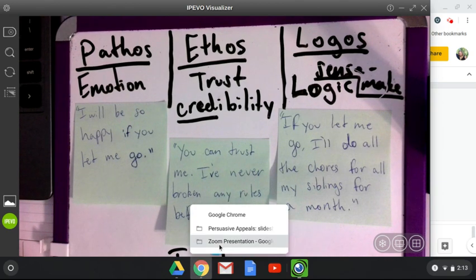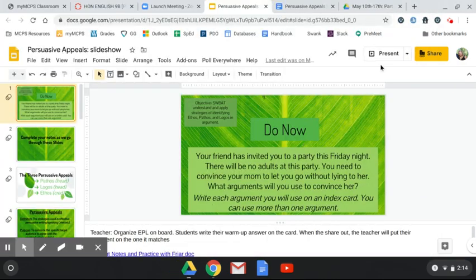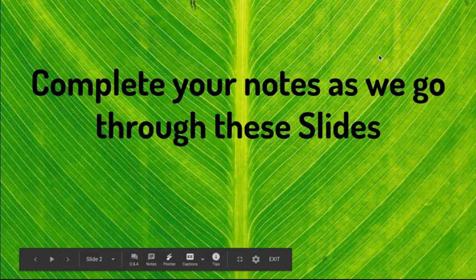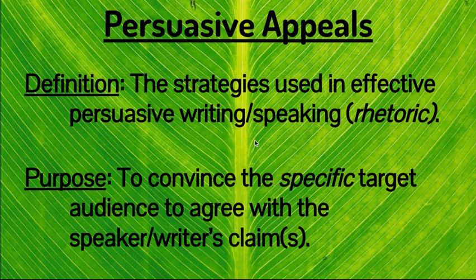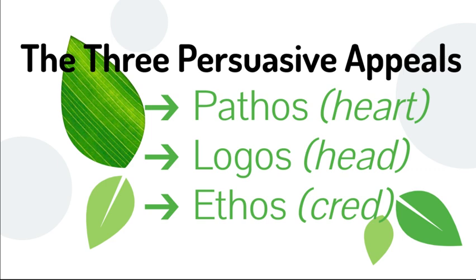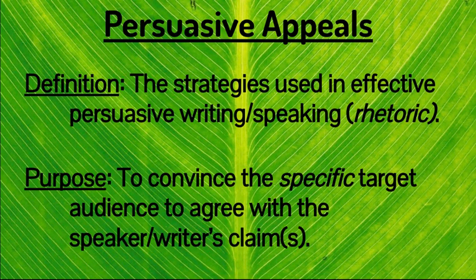Back to the slideshow — make sure you're following along in your notes. The three persuasive appeals: pathos appeals to the heart, logos appeals to the head, ethos appeals to the cred. That's a nice way to remember: heart, head, cred. Pathos appeals to your emotions; logos to your logic or understanding of the world; ethos to your credibility or trustworthiness. The definition of persuasive appeals: the strategies used in effective persuasive writing and speaking — also known as rhetoric, an old Greek word you will see again.